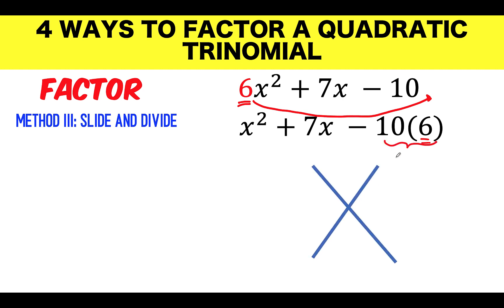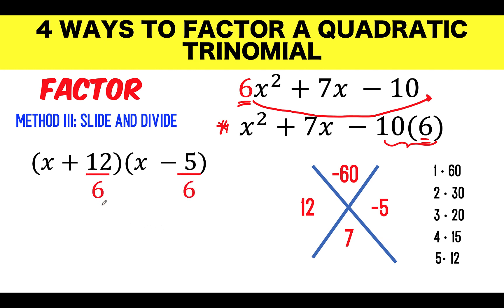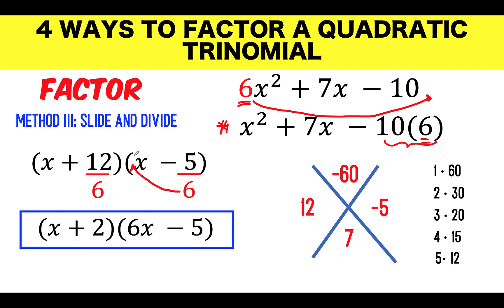We now factor x² + 7x − 60 instead of the original. Identify AC = 1 × (−60) = −60, and B = 7. Find factors of negative 60 that add to 7 — those are 12 and negative 5. Factor: x² + 7x − 60 = (x + 12)(x − 5). Now divide both constants by 6: 12 ÷ 6 = 2, giving (x + 2). Since 5 ÷ 6 is not an integer, slide 6 back to x, giving (6x − 5). Final answer: (x + 2)(6x − 5).